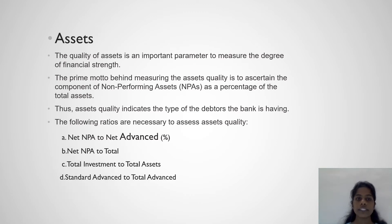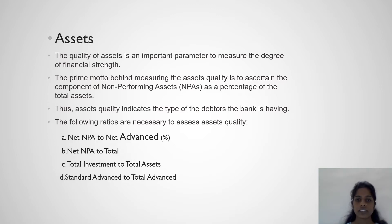Asset quality is an important parameter to measure the degree of financial strength. The prime motto behind measuring asset quality is to ascertain the component of non-performing assets as a percentage of the total asset. Asset quality indicates the type of debtors the bank has. The following ratios are necessary to assess asset quality: Net NPA to Net Advance, Net NPA to Total Assets, Total Investment to Total Assets, and Standard Advance to Total Advance.